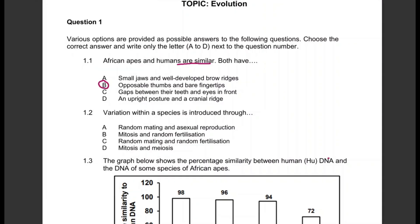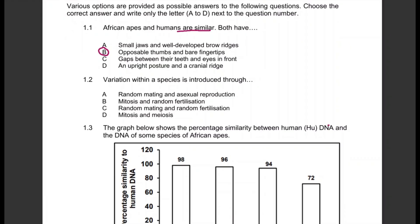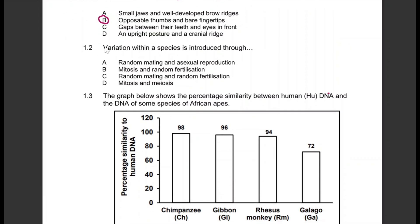Question 1.2: Variation within a species is introduced through what? The options are: random mating and asexual reproduction; mitosis and random fertilization; random mating and random fertilization; and mitosis and meiosis. The answer is definitely C — variation within a species is introduced by random mating and random fertilization.